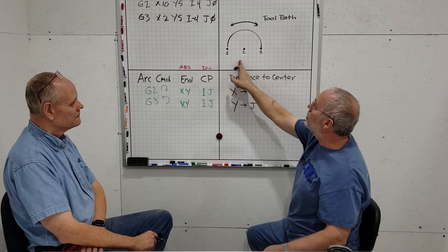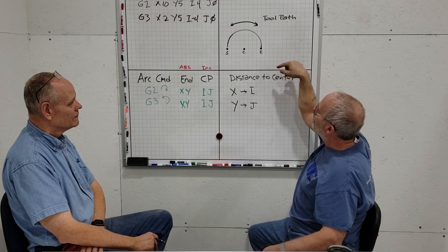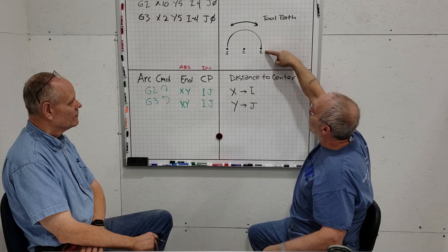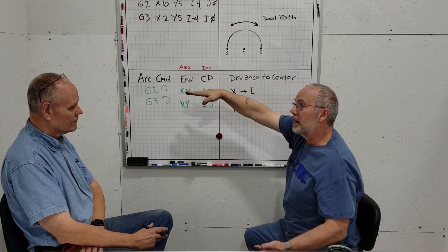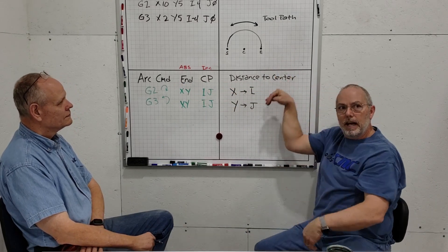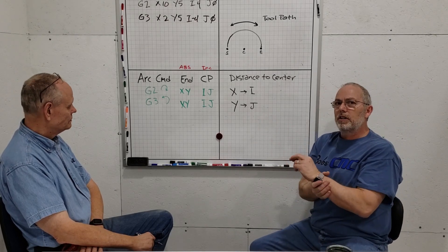It's going to be defined from the start point to the center, and yes, signs matter. If your X direction, which is the I component, is going in the positive direction, it's positive like in this example. The positive direction is going positive on the number line. If you're going from the start point to the center and going left, that's negative. Positive is up, negative is down in J.